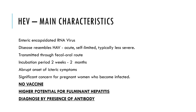HEV works very similarly to HAV. It's an enteric encapsulated RNA virus — another RNA virus, but not a coronavirus. It resembles HAV: you can have acute, self-limited infection, and it's typically less severe than the other hepatitis viruses. However, HEV is more likely to move to fulminant hepatitis than HAV, though neither are that likely — both are under 3%. Transmission is again through the fecal-oral route, with that same variably long incubation period and abrupt onset of icteric symptoms.